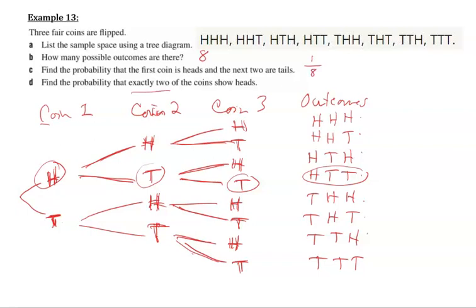Now we'll find the probability that exactly two of the coins show heads. Well, I'll put that in a box, shall we? Two of the coins. Oh, that's not exactly two. Hang on. That's not exactly two. That's more than two.